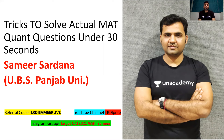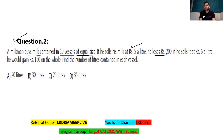You need to use the options to answer the questions quickly. Now question number two: a milkman buys milk contained in 10 vessels of equal size. If he sells his milk at rupees 5 a litre, he loses rupees 200. If he sells it at rupees 6 a litre, he would gain 150 on the whole. Find the number of litres contained in each vessel.